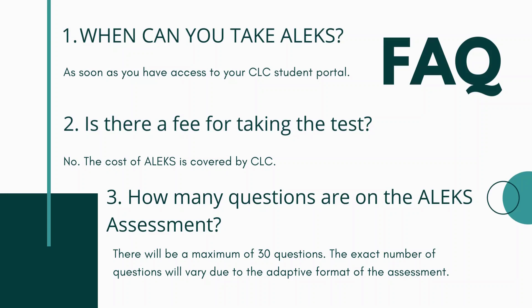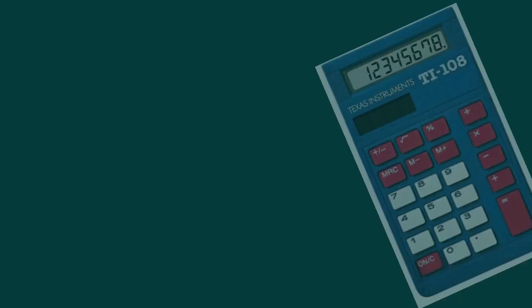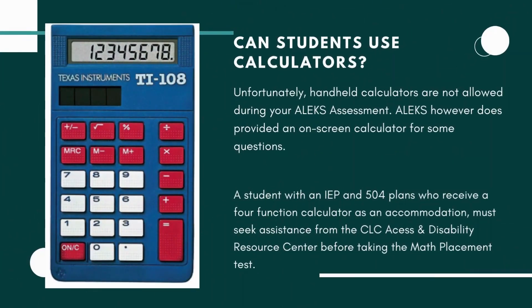The third question: how many questions are on the ALEKS assessment? There will be a maximum of about 30 questions. The exact number will vary due to the adaptive format of the assessment. Another big question: can students use calculators? Unfortunately, the answer is no. Handheld or graphing calculators are not allowed during your ALEKS assessment. However, ALEKS does provide an on-screen calculator for certain questions. For all other questions, you will need scratch paper and a pencil or pen to work out the problems.